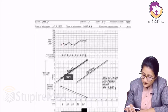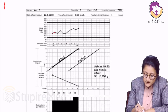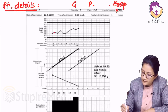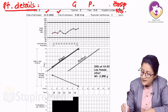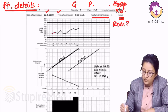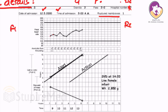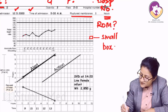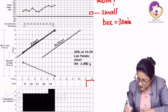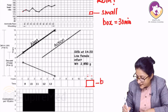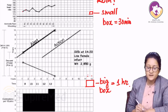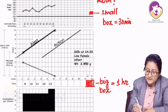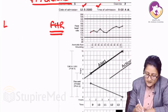The partogram records patient details — name, gravida, para, hospital number, date and time of admission, and time of rupture of membranes. Fetal heart rate is also measured and plotted. On the x-axis, a small box equals 30 minutes and a large box (comprising two small boxes) equals one hour. Fetal heart rate is plotted at 30-minute intervals for low-risk women in active labor.